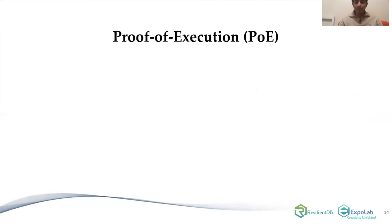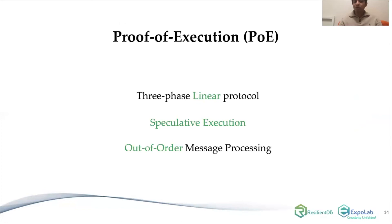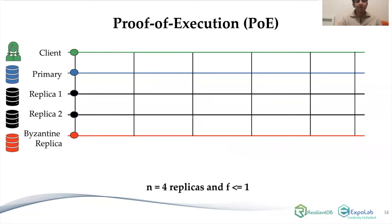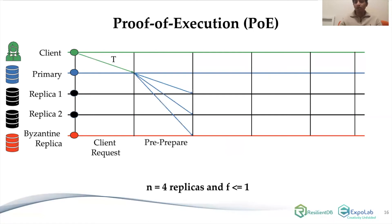PoE provides a three-phase linear protocol that employs speculative execution and allows out-of-order message processing, without depending on any clients or trusted components. To understand PoE, we take a system with a client and four replicas. PoE is also a primary-backup protocol. The client sends the request to the primary, which assigns a sequence number and sends the transaction to all replicas — exactly like PBFT so far.